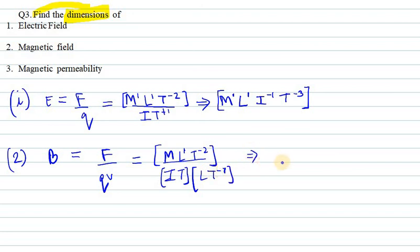Distance over time, so L and L gets cancelled out here, and T raise to power minus 1 and T gets cancelled out here again. So M I raise to power minus 1 then T raise to power minus 2.